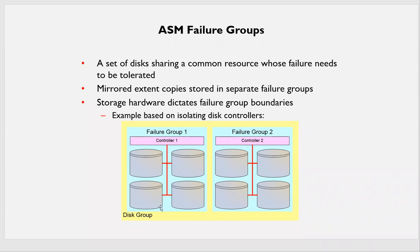Failure groups: with 8 disks in one disk group, I divide them into two groups — failure group one (4 disks) and failure group two (4 disks). If I write data A, B, C, D to failure group one, the mirrored copy is written to A, B, C, D in failure group two. What happens if you lose all four disks in a failure group? Your entire A, B, C, D data is still available in the other failure group. If you don't have failure groups and write data randomly, losing one disk could cause data loss.